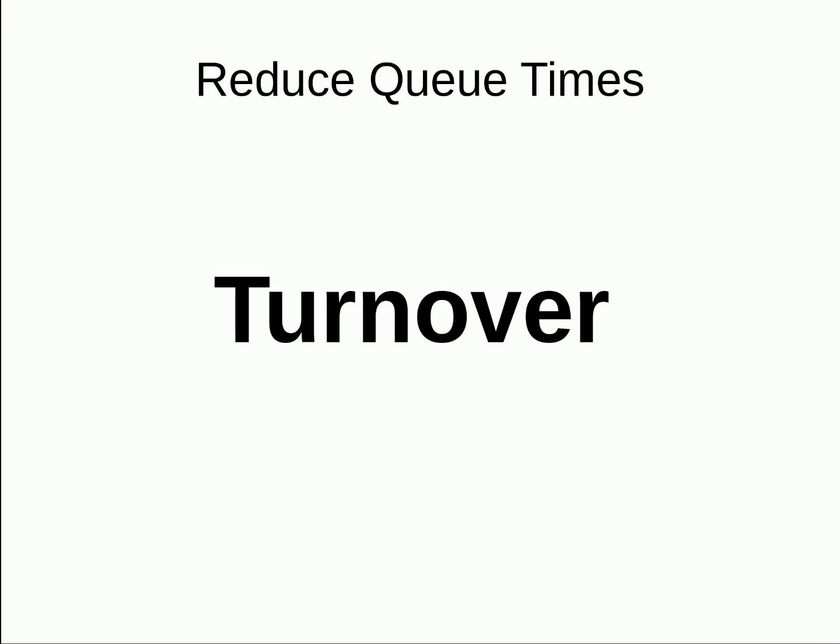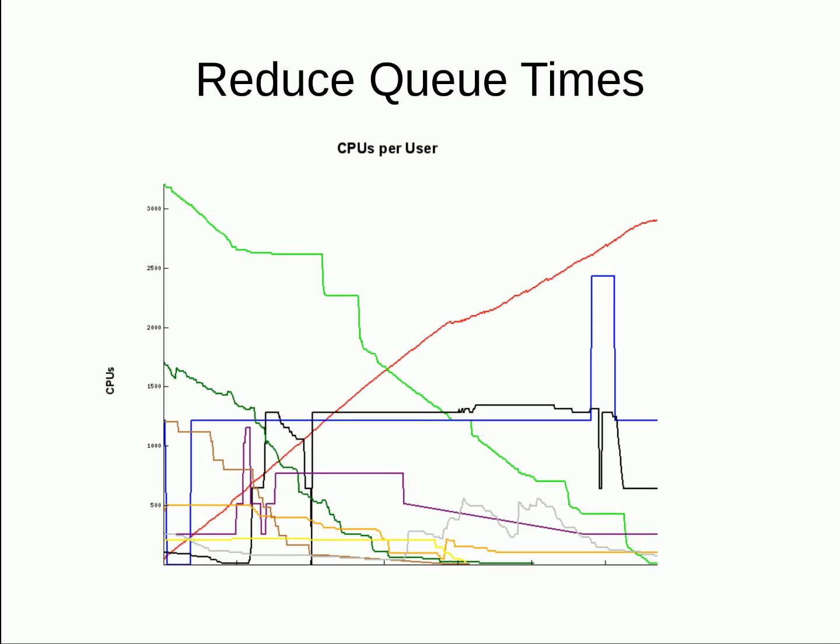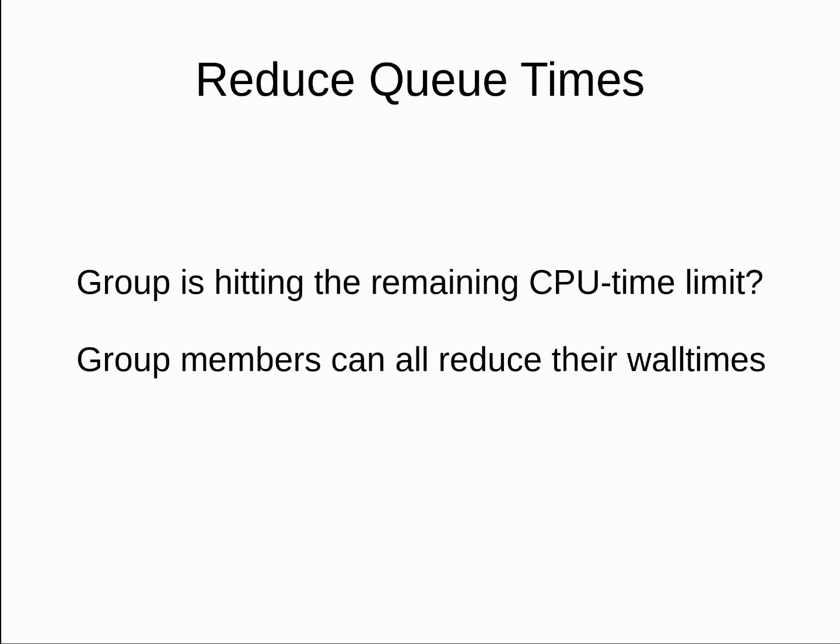The GRPCPU RunMins limit effectively staggers job start and end times, making it so that turnover is spread somewhat evenly over time. On this graph, the x-axis represents time and the y-axis is the number of CPU cores in use, and each color is a user. The red and light green users are in the same research group and were hitting their account limit. The red user hadn't run for a while, but the light green user had lots of historical usage. Once the red user submitted a lot of jobs, the usage of the light green user tapered off over time. The slope of that line would be steeper if the light green user had a shorter wall time, meaning the red user would have started more jobs more quickly. If your group is hitting the limit on remaining CPU time, or pretty much any other limit, reducing the wall time of group members will likely benefit you.